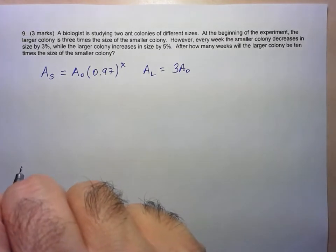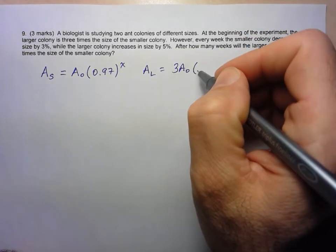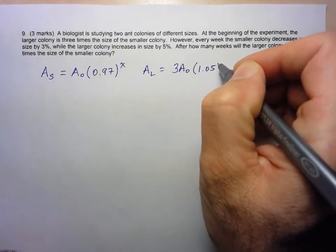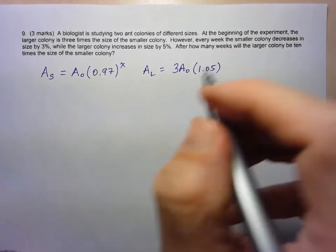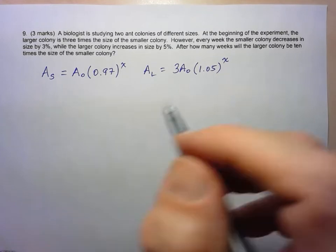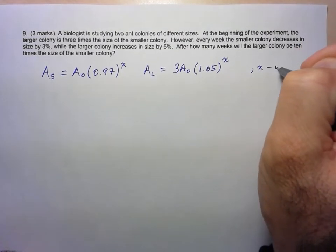So I'll use the same variable but just multiply it by 3. And this increases by 5%. So 1.05 and again every week. So my variable is just X. So X here is just in weeks.